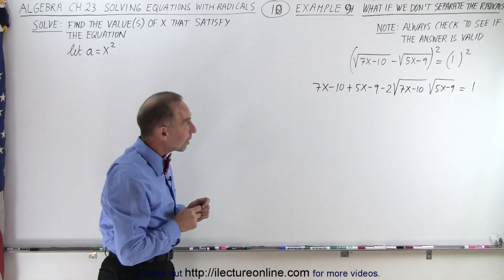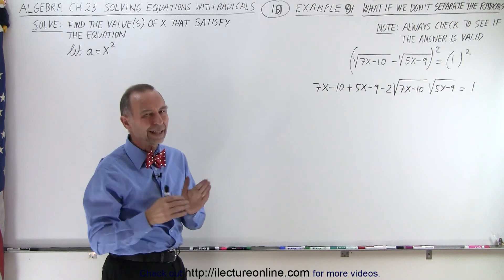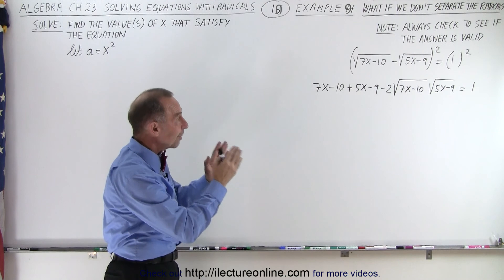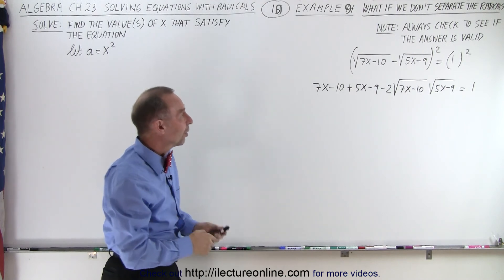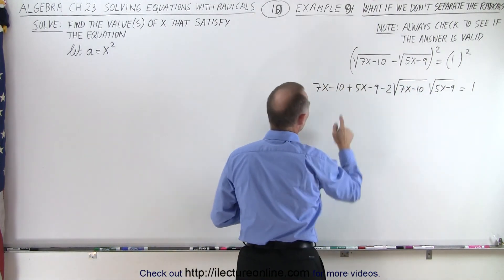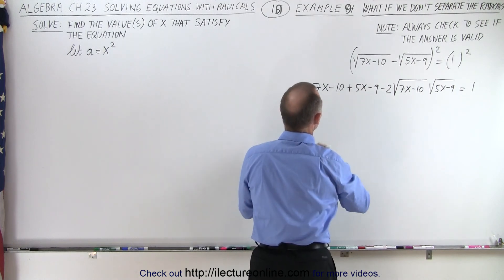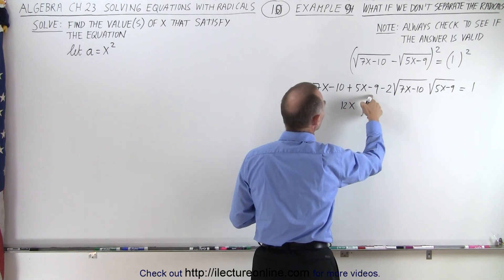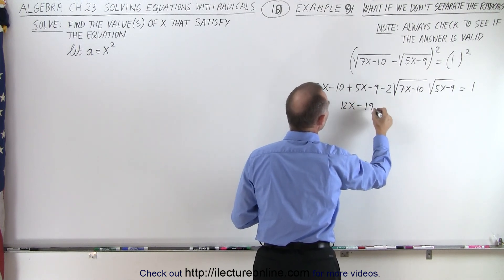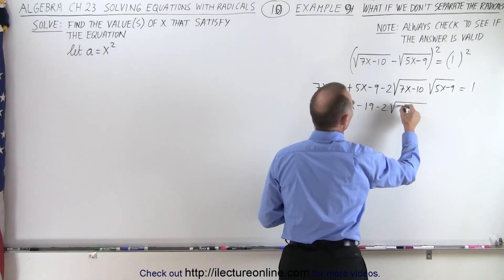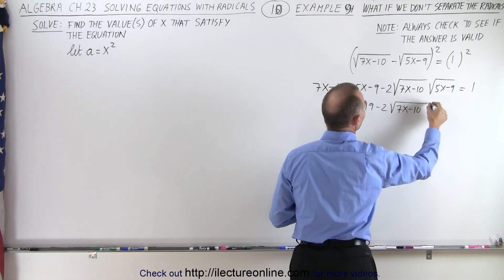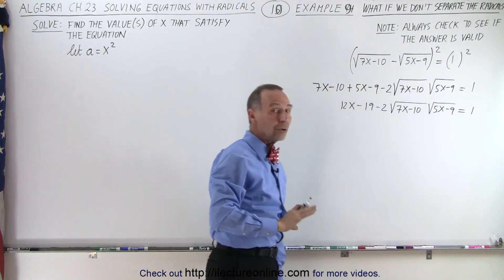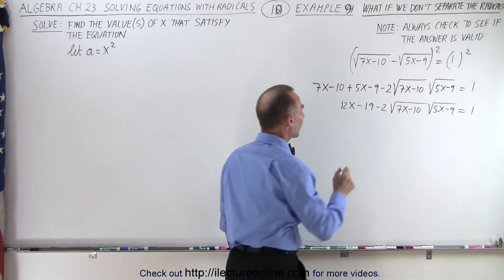Notice we end up with the product of two radicals on the left side, and that's where we're in trouble — because now we're going to have to square both sides again once we separate the radicals from the non-radicals. So let's move all these terms to the right side. Before we do that, let's collect common terms: 7x plus 5x is 12x; minus 10 minus 9 is minus 19. So we have 12x minus 19 minus 2 times the square root of (7x minus 10) times the square root of (5x minus 9) equals 1.